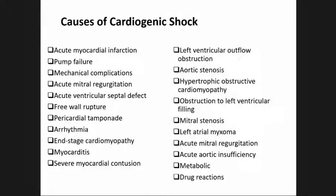Causes of cardiogenic shock include acute myocardial infarction, pump failure, mechanical complications, acute mitral regurgitation, acute ventricular septal defect, free wall rupture, pericardial tamponade, arrhythmia, end-stage cardiomyopathy, myocarditis, severe myocardial contusion, left ventricular outflow obstruction, aortic stenosis, hypertrophic obstructive cardiomyopathy, obstruction to left ventricular filling, mitral stenosis, left atrial myxoma, acute mitral regurgitation, acute aortic insufficiency, and metabolic and drug reactions. The most common cause is acute extensive myocardial infarction.